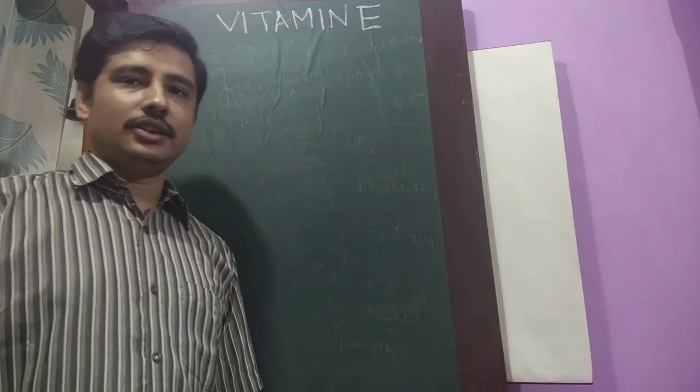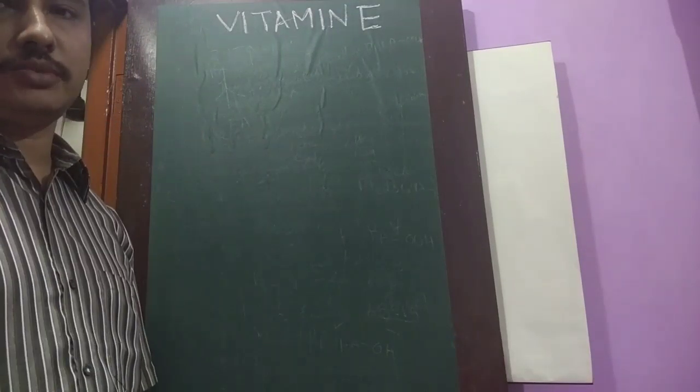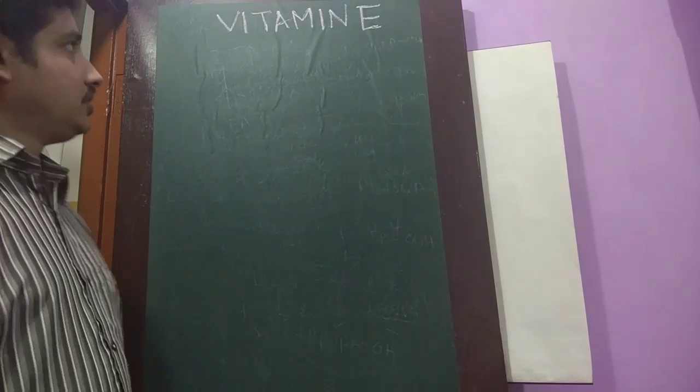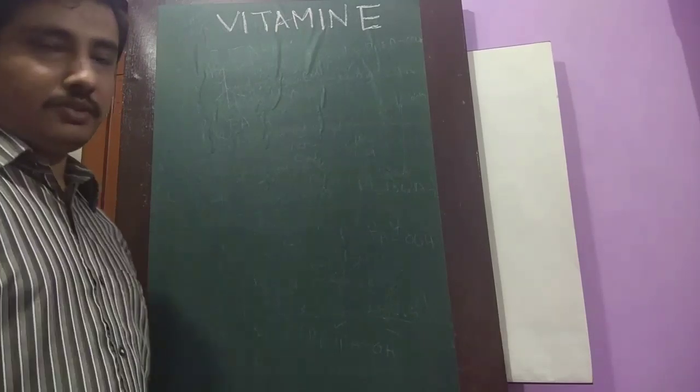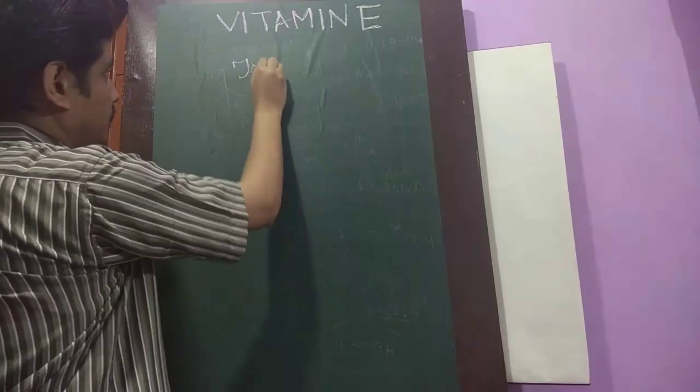Hello students. Today I am going to take a small topic on vitamin E. So vitamin E is a fat-soluble vitamin and its chemical name is tocopherol.